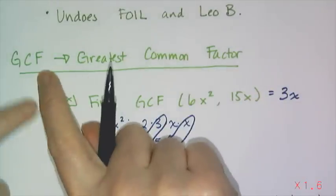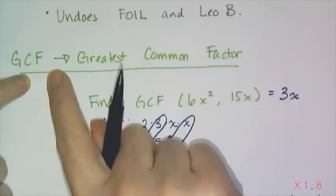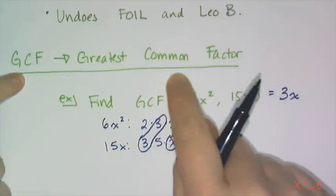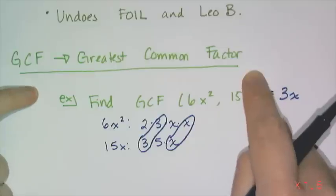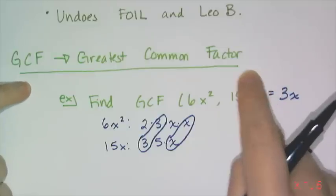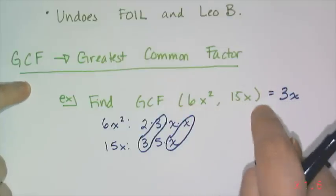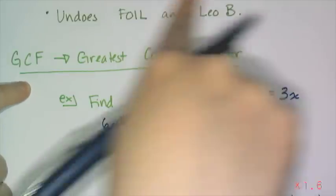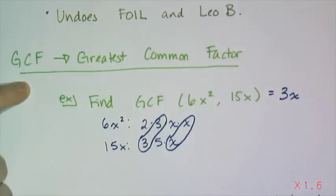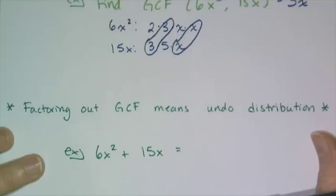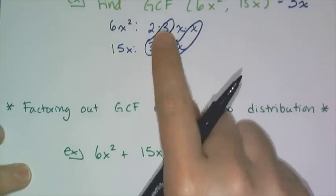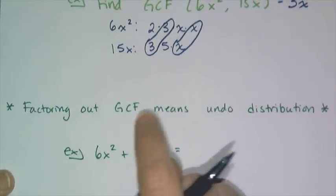Now this GCF is going to come in handy all throughout the factoring unit because if you can find a greatest common factor between terms, you can always take it out, factor it out to make all the numbers smaller and easier to deal with. Now finding the GCF and factoring out the GCF are slightly different.